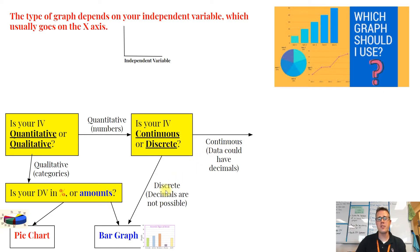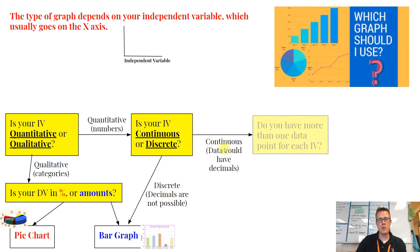If you're going to have something that's discrete, that's going to make you have a bar graph. If it's continuous, we still have to ask a couple more questions. You then have to ask: could you have more than one data point for each IV?